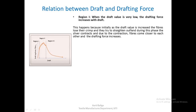In region one, as you increase the draft, the fibers lose their crimp and entanglement and try to straighten out. As they straighten, the sliver bulk reduces and some lateral contraction occurs. This causes the fibers to come closer and become more compact, which holds on to the faster moving fibers and does not allow them to move forward. This increases the drafting force resistance in this region.